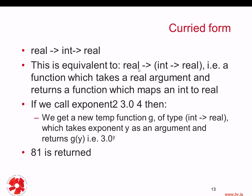How do we interpret real arrow int arrow real? This is equivalent to real maps to (int maps to real). It means a function that takes a real as an argument and returns a function which maps an int to real. The arrow denotes function type: on the left-hand side we have the input of type real, and on the right-hand side we have the result, which is itself a functional type — int to real — a function that maps an int to real.